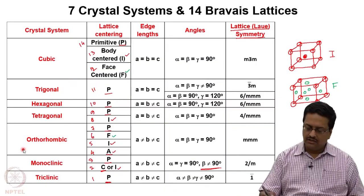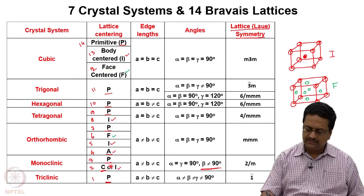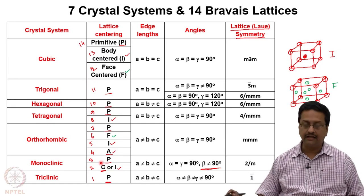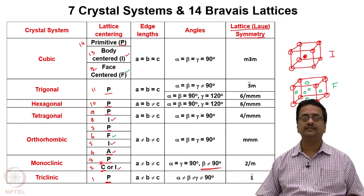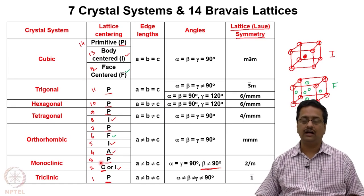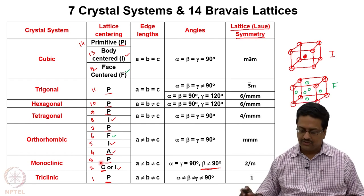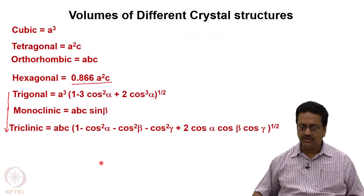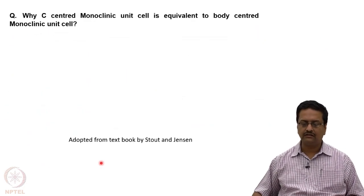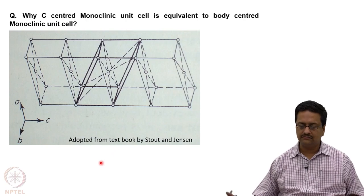In that, we discussed about the fact that in the monoclinic system we have C and I, and I indicated that these two are one and the same. So today we will see how these two are the same.